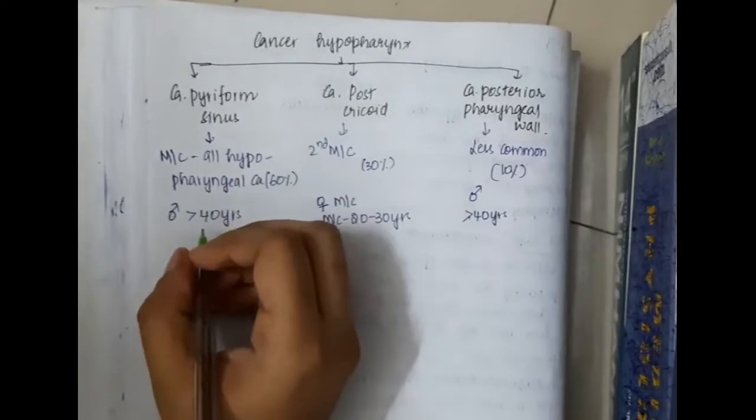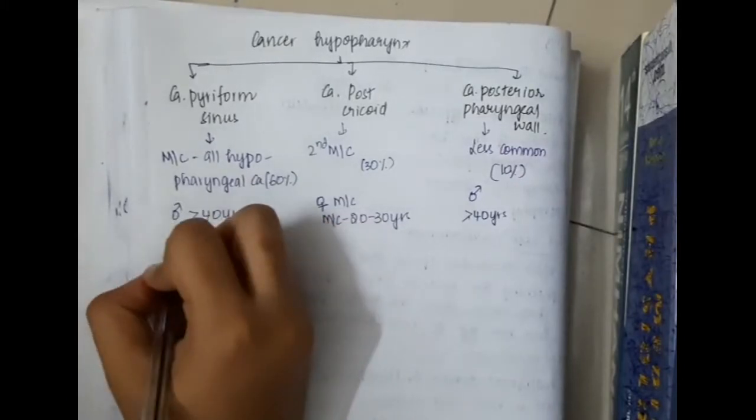Then we have carcinoma posterior pharyngeal wall. In carcinoma posterior pharyngeal wall, this is actually less common, seen in 10% of individuals. This carcinoma posterior pharyngeal wall is seen in males more than 40 years of age.